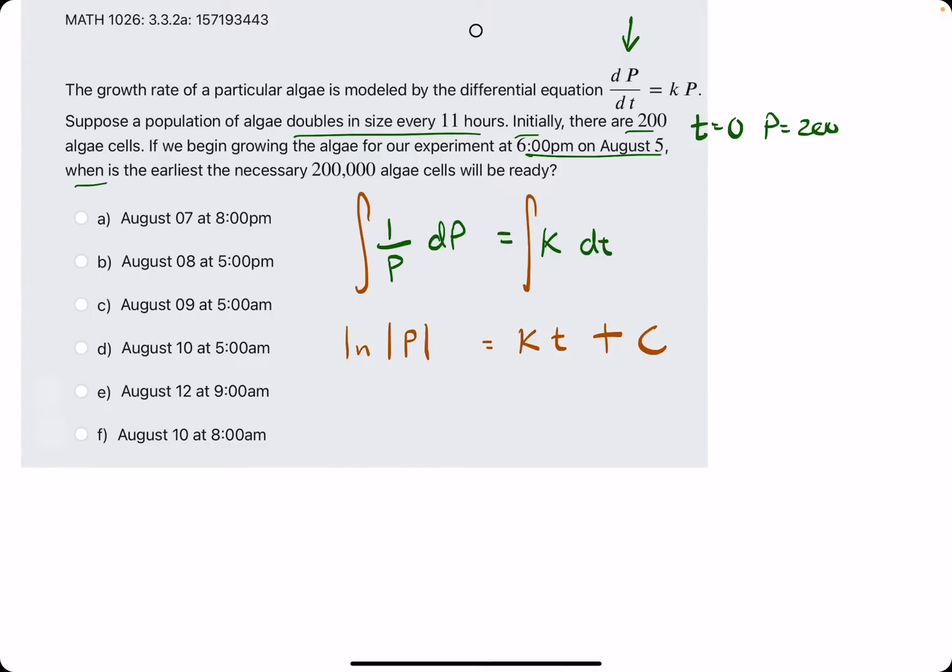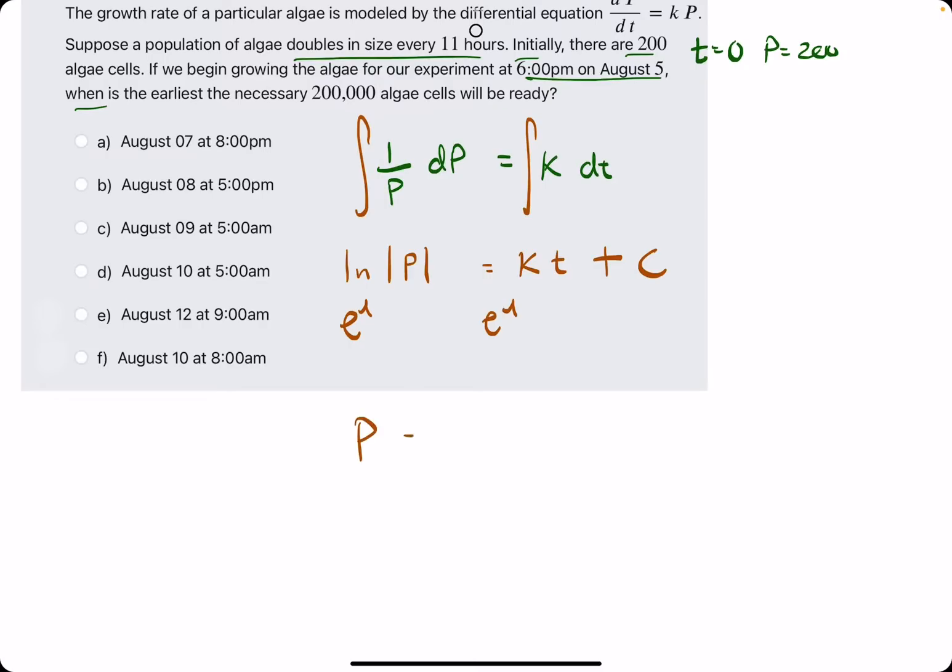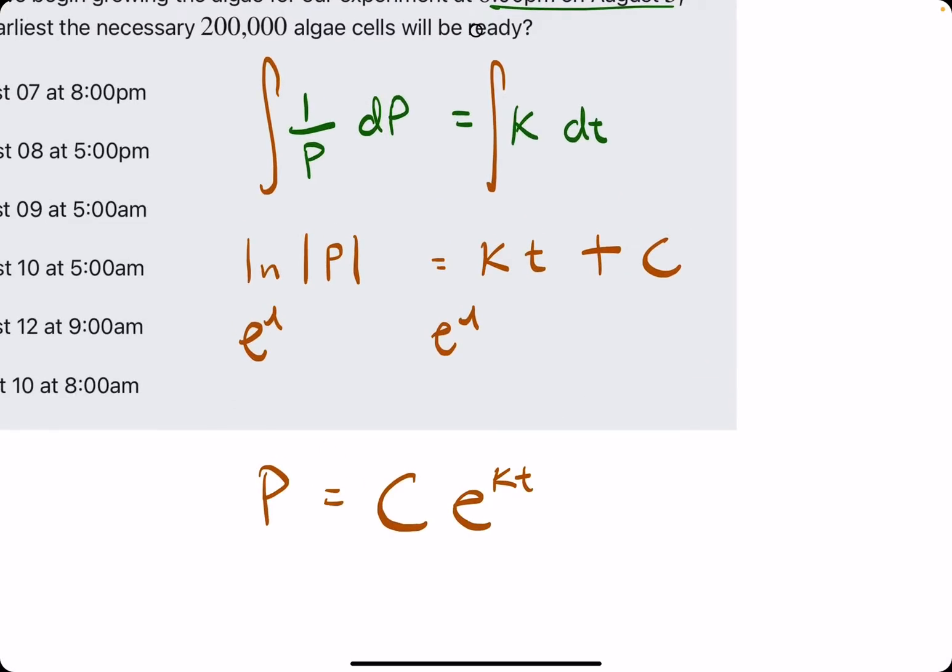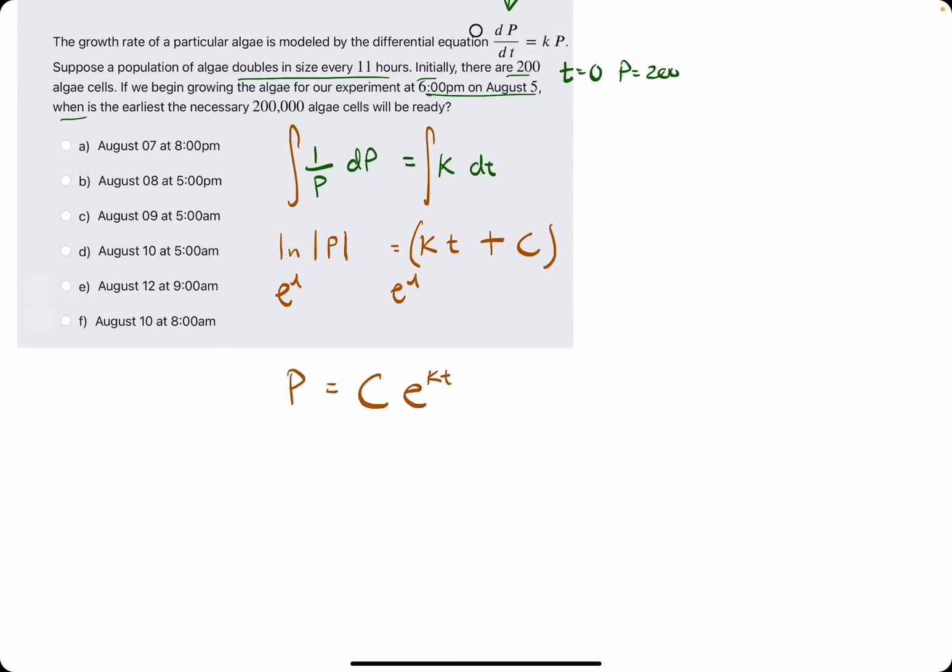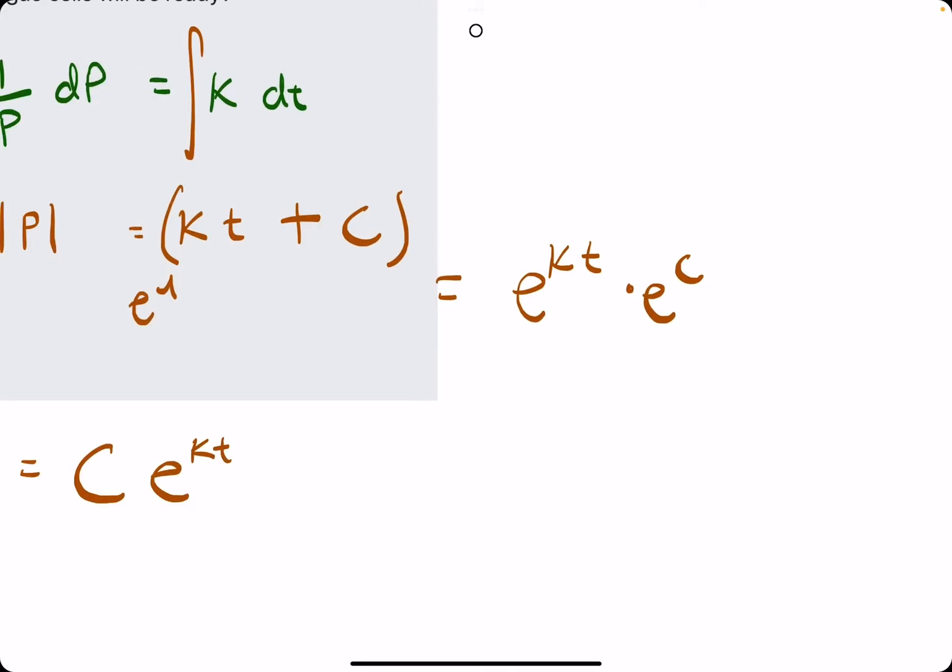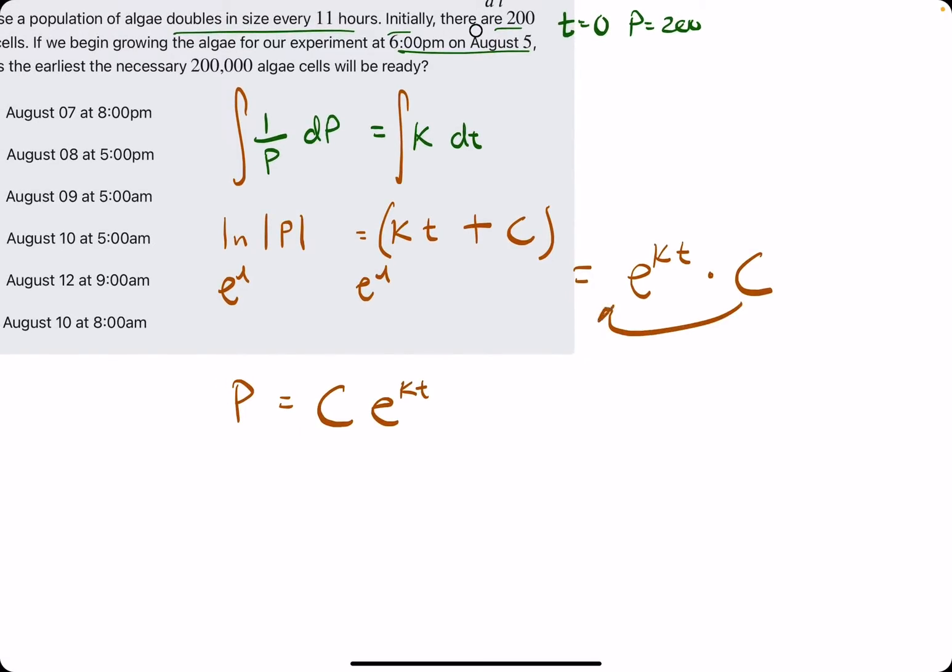Keep in mind the antiderivative of a constant is just that constant times T. And now we add plus C like usual. We can go ahead and make E the base of both sides, simplifying this whole thing down to CE to the KT. Again, the plus C in the exponent can be rewritten. Like this whole thing could be rewritten like so. And then E to the C is just a constant.